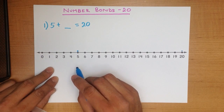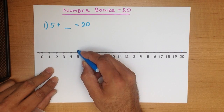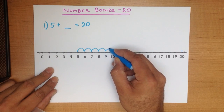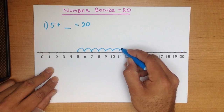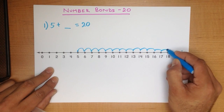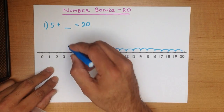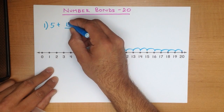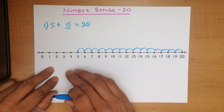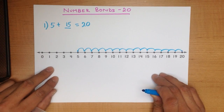So how many jumps do we have to make to get to 20? Let's go through this: 1, 2, 3, 4, 5, 6, 7, 8, 9, 10, 11, 12, 13, 14, 15. That is our answer. 5 plus 15 equals 20. And this is how the number line works — it is very simple and a fantastic resource to use.